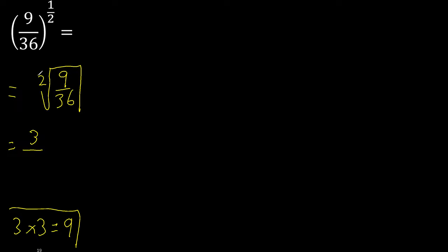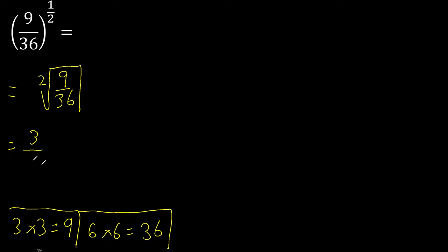2 equal numbers that multiply to give 36 — 6 multiplied by 6 is 36. Can be simplified because it can be divided by the same number. Divided by 3: 3 divided by 3 is 1, 6 divided by 3 is 2. Finish.